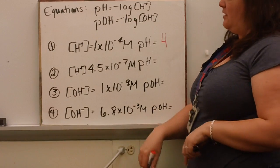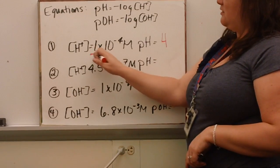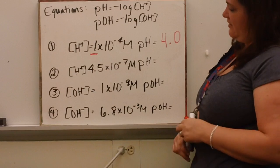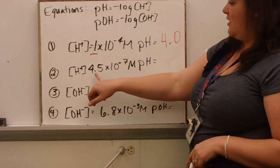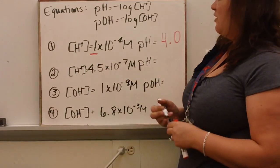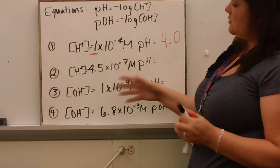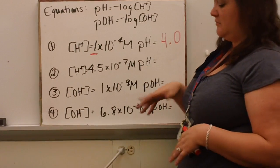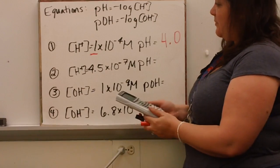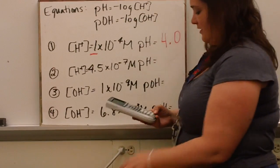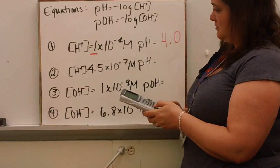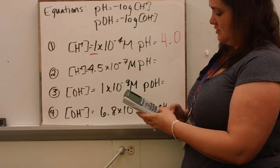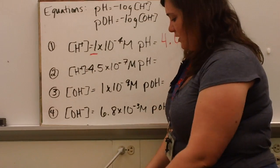A note about significant figures and pH: the number of significant figures in your concentration is the number of decimal places you need in your pH. For example, what's the pH of a hydrogen ion concentration of 4.5×10⁻⁷? It should be close to 7. On the calculator, type in negative log, then 4.5 using the EE button times 10 to the minus 7, and we get 6.35.